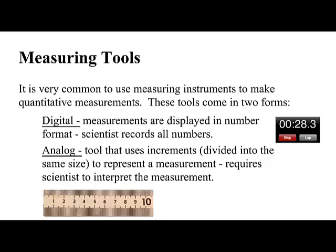One is digital. These are measurements in which numbers are displayed for you. For example, this is the iPhone timer, and you see a 2, an 8, a decimal, and a 3. It's pretty simple. All the scientist needs to do is record every single number that shows up on the screen.